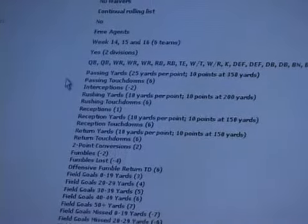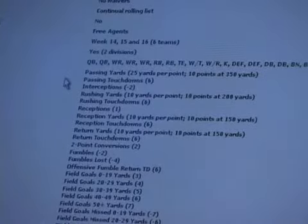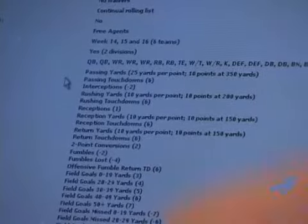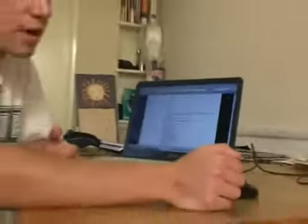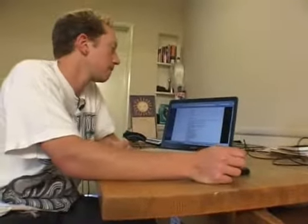The pretty standard scoring is passing yards at 25 yards per point, which basically means every time a quarterback throws for 25 yards, you get a point. And every time they throw a touchdown, that's six points.